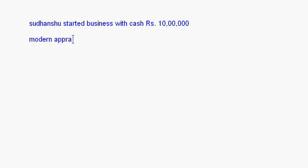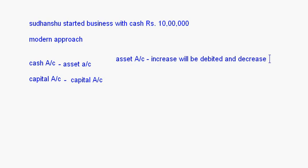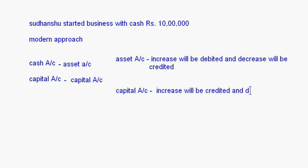The same transaction — started business with cash rupees 10 lakh — now I'm going to take it up with the modern approach. Again, the accounts involved will be the same: cash and capital account. The classification of these accounts is different now. Cash account comes under asset account, and capital account — the proprietor bringing in capital — comes under the capital account classification. The rule for asset account: increase will be debited and decrease will be credited. The rule for capital account is the opposite: increase will be credited and decrease will be debited.